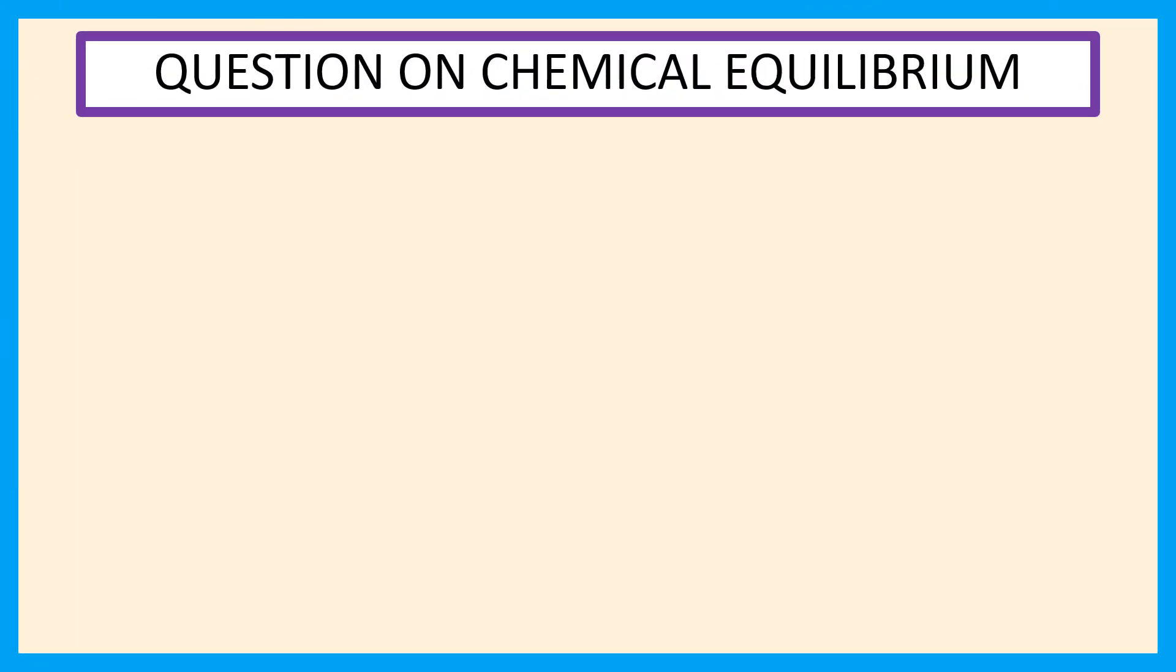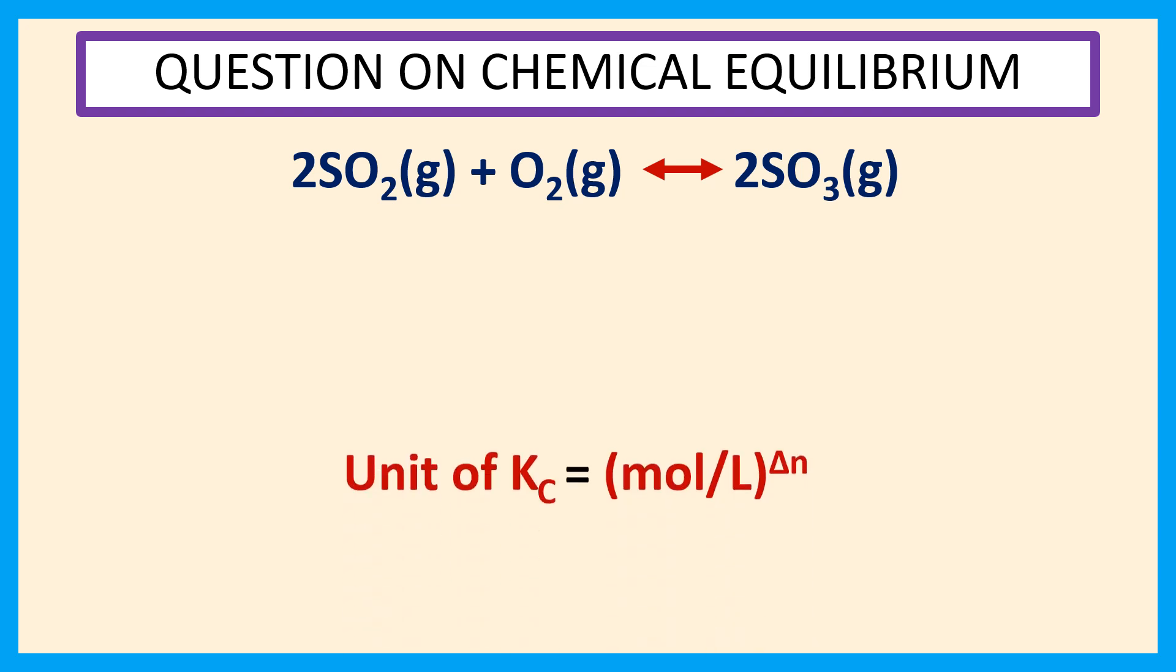Given reaction is 2SO2(g) + O2(g) ⇌ 2SO3(g). We know unit of Kc equals (mol/L)^ΔN, where ΔN is the difference in number of moles of gaseous products and reactants.